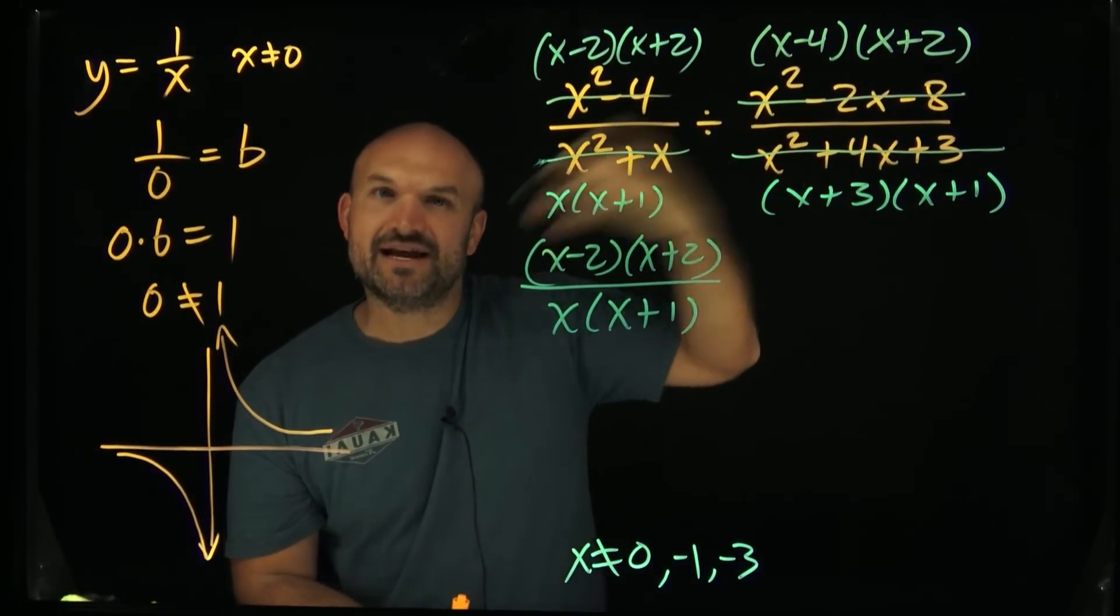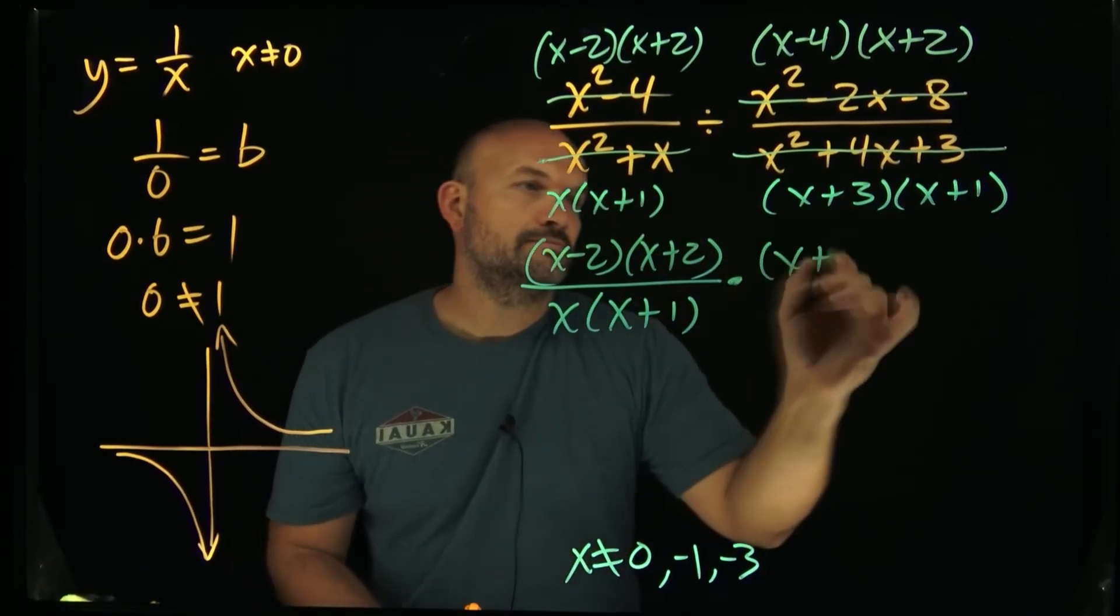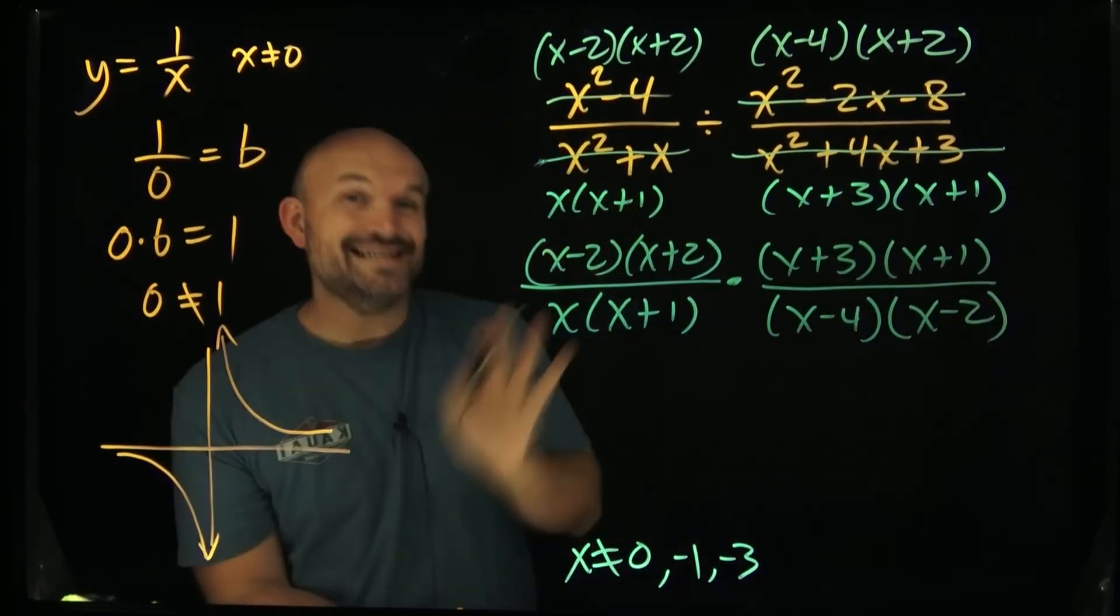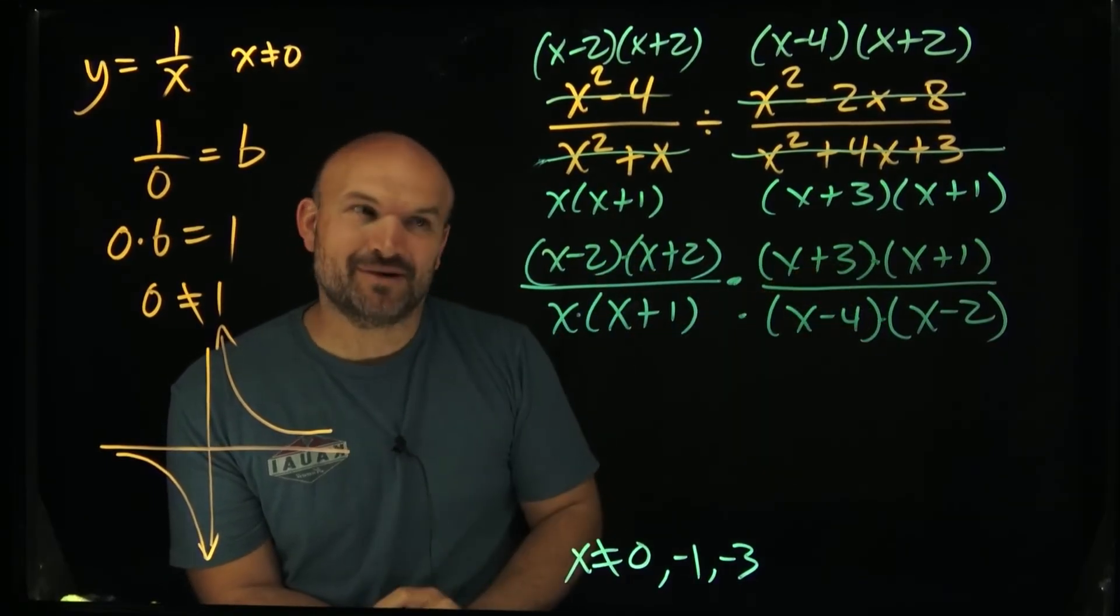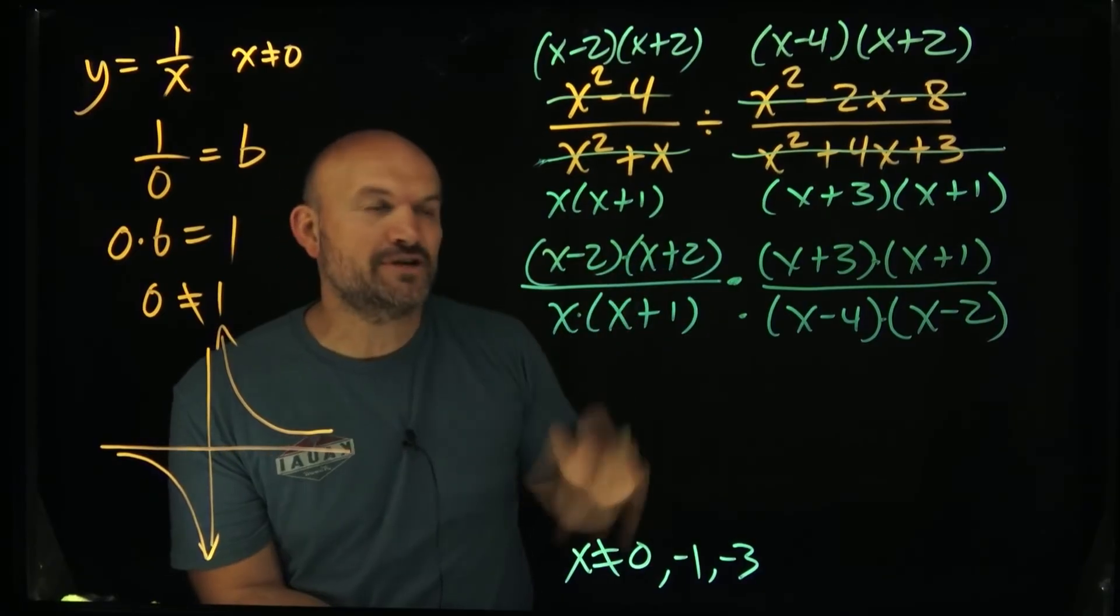Now you can see that all of my terms here are separated by multiplication. Now I can have a cancel party, so now I'm just going to divide all terms that are the same in the numerator and same in the denominator.